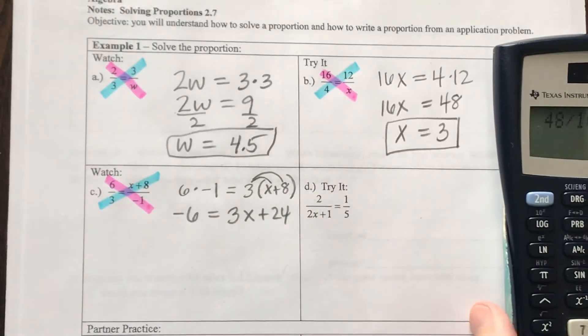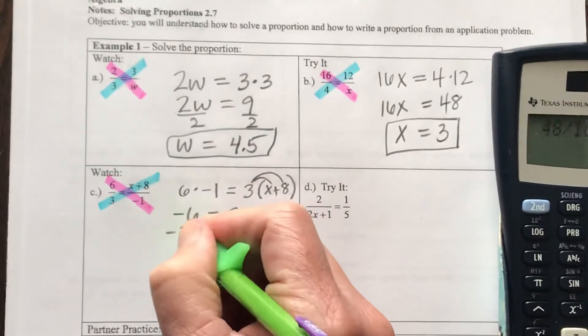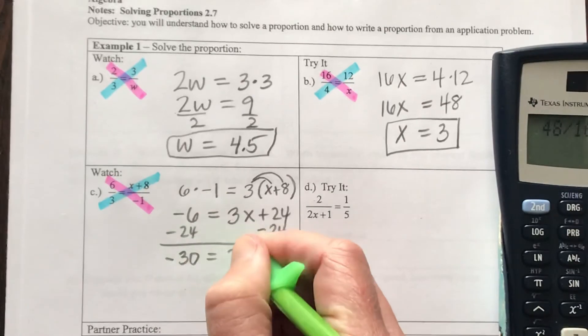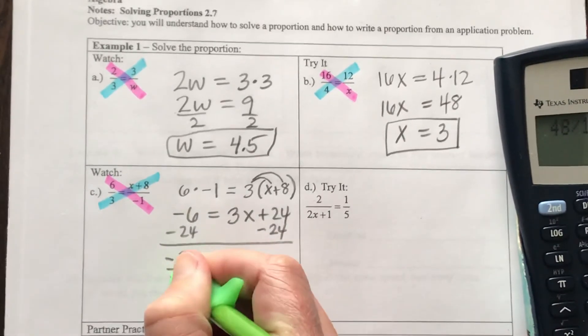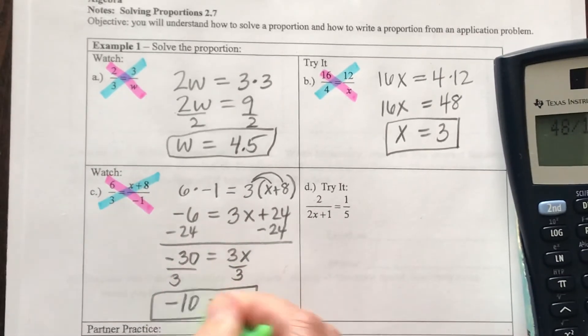Now to solve for X, what I need to do is subtract 24 on both sides. Now I'm going to have negative 30 is equal to 3X. And if I divide both sides by 3, I'm going to get negative 10 is equal to our X.